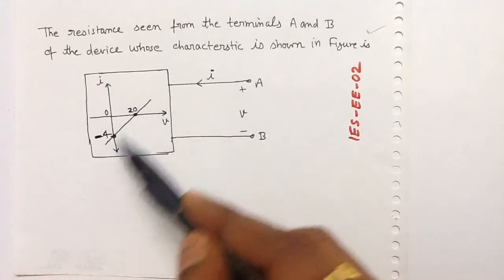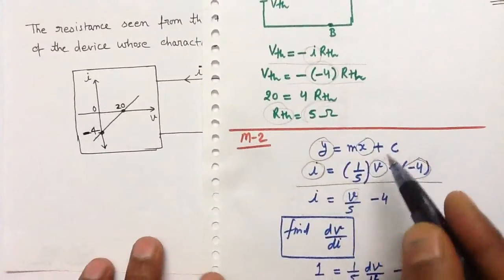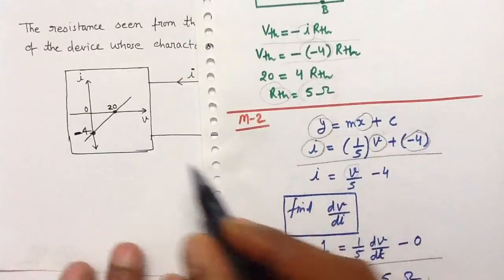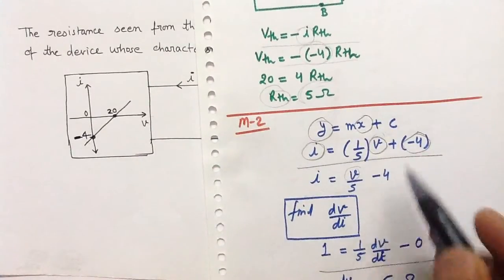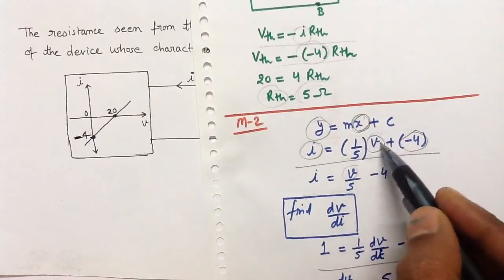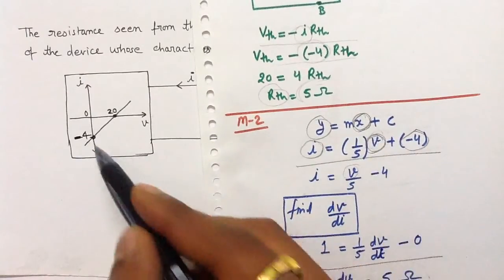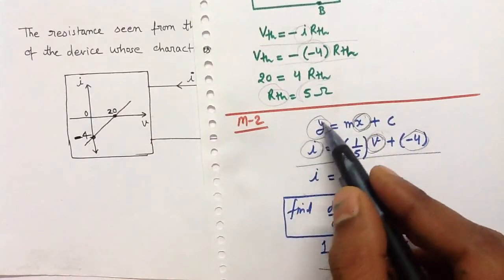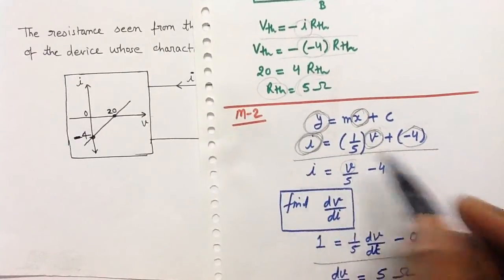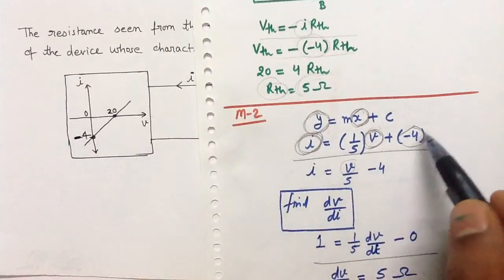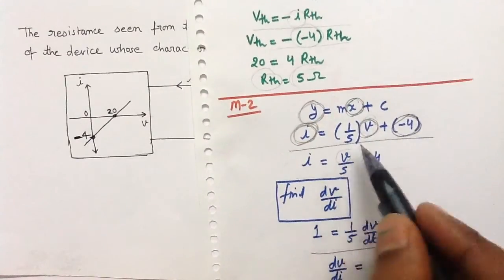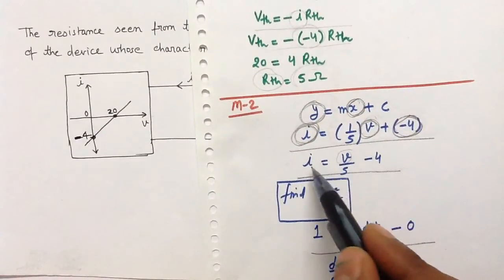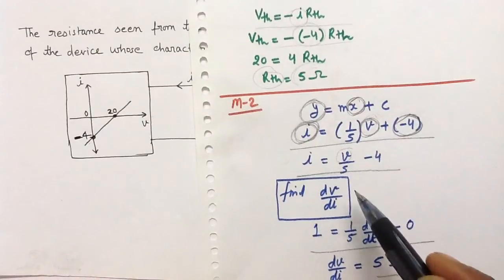You can find the equation of this straight line by using the formula Y equals MX plus C. On the X axis voltage drop is given, so this X can be replaced by V. On the Y axis current is given, so Y can be replaced by I. And the Y intercept is minus 4, so C can be replaced by minus 4. In this way you can get this equation: I equals V upon 5 minus 4.